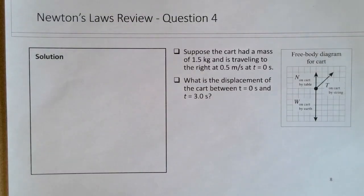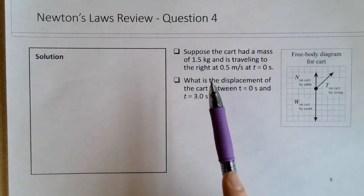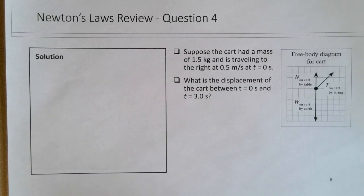Okay, so in this Newton's Law review question, it's carrying on from question 3. We're considering a quantitative aspect to this free-body diagram. We're told that the cart has a mass of 1.5 kg and it's travelling to the right at 0.5 meters per second at t equals 0 seconds. And we're asked to find what is the displacement of the cart between t equals 0 and t equals 3 seconds.